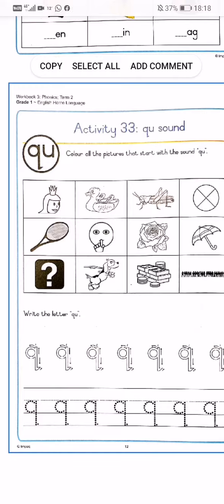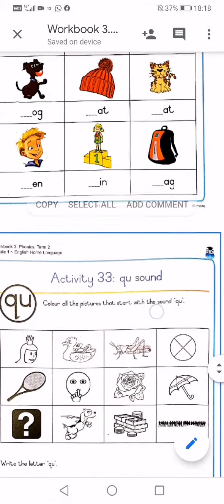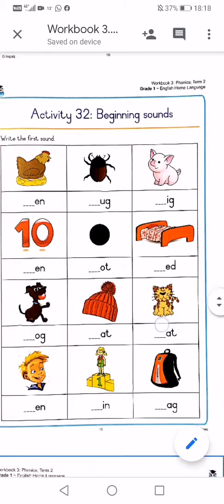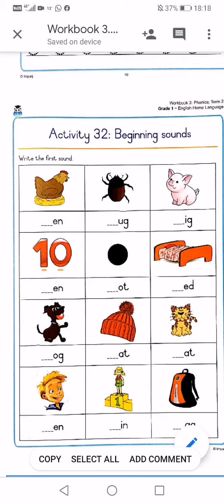Then you're going to write the letter Q and trace the letter Q at the bottom. This is your last two activities for workbook 3. You can do it on Wednesday and Thursday. Love you. Bye.